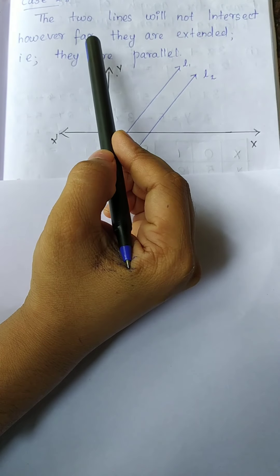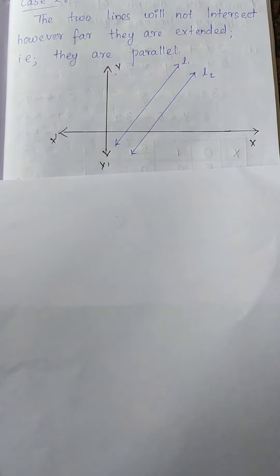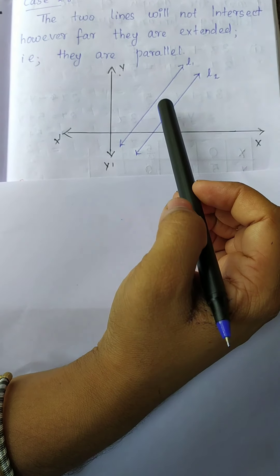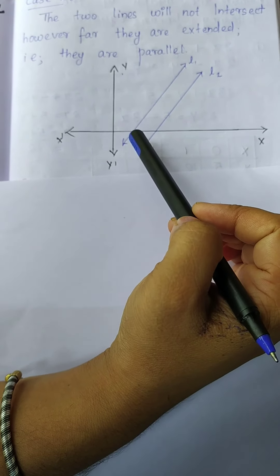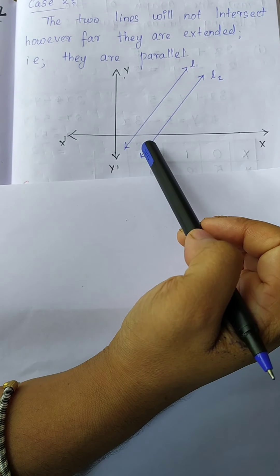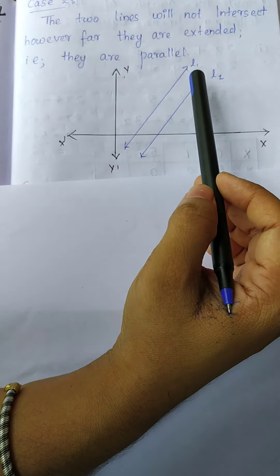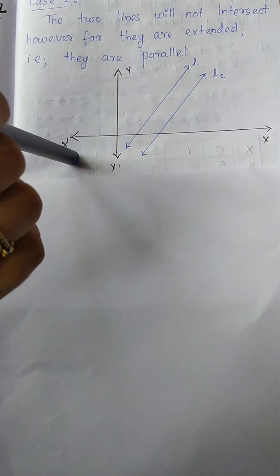Second case: the two lines will not intersect — they are parallel. When we solve graphically, the two lines appear parallel and do not intersect. In such a case, the equation is inconsistent with no solution. If such a graph is given, we can clearly state that this system has no solution.